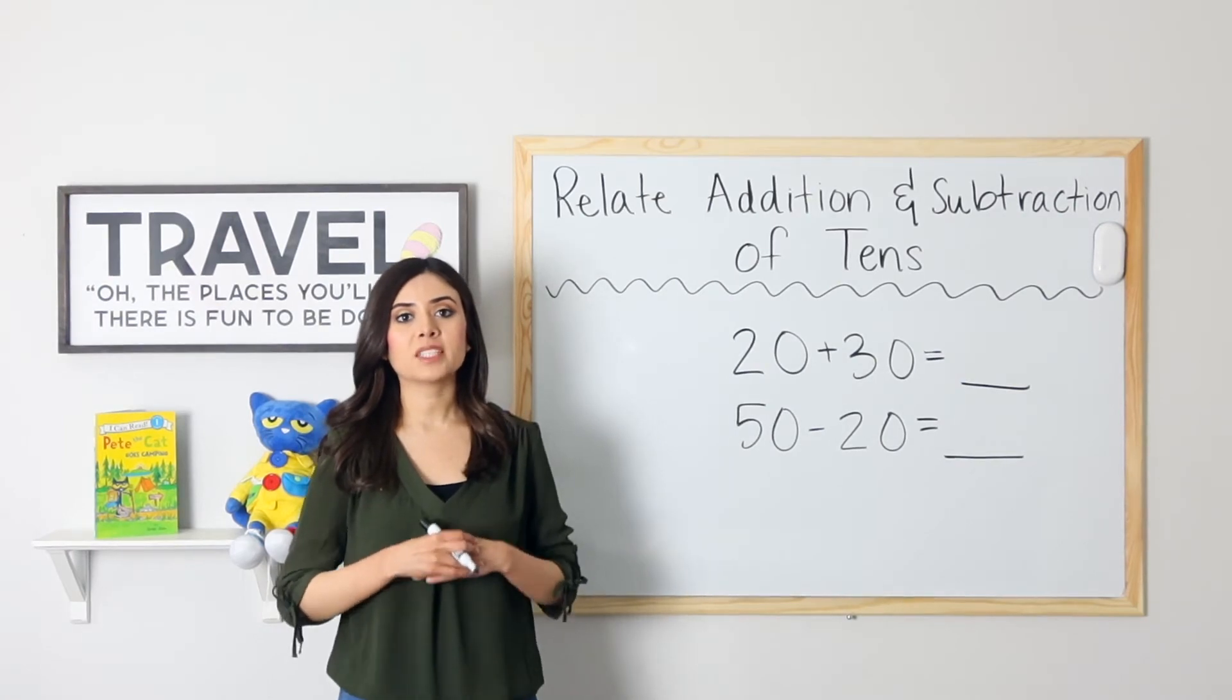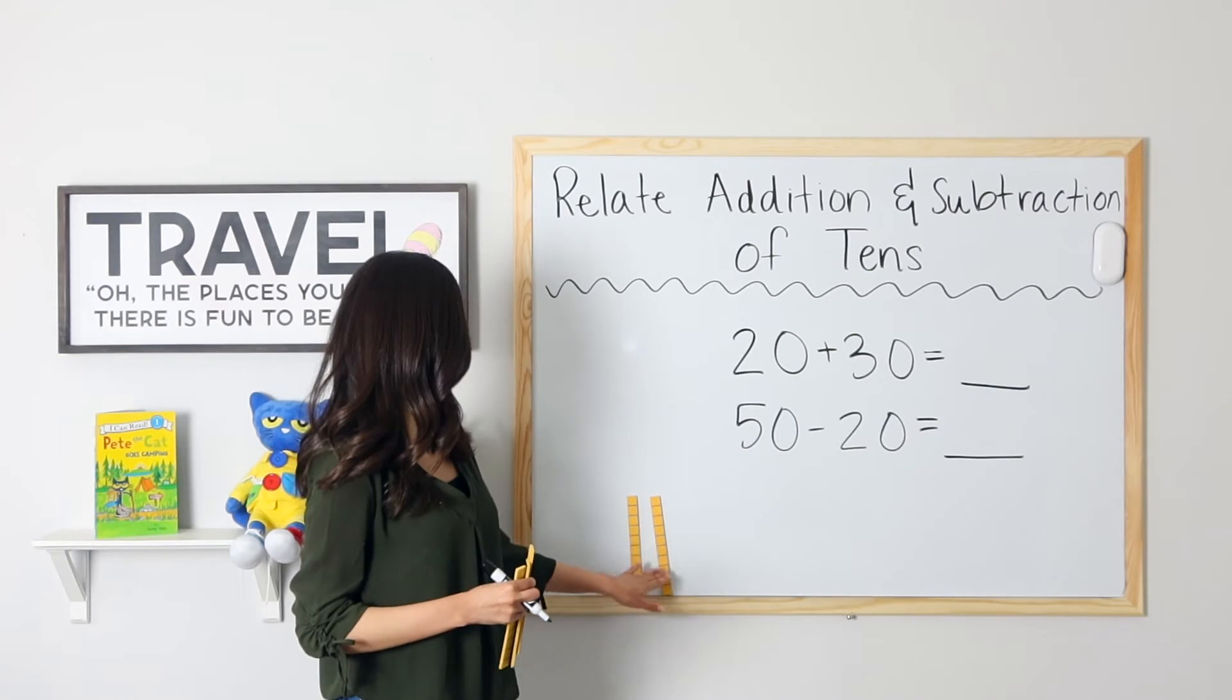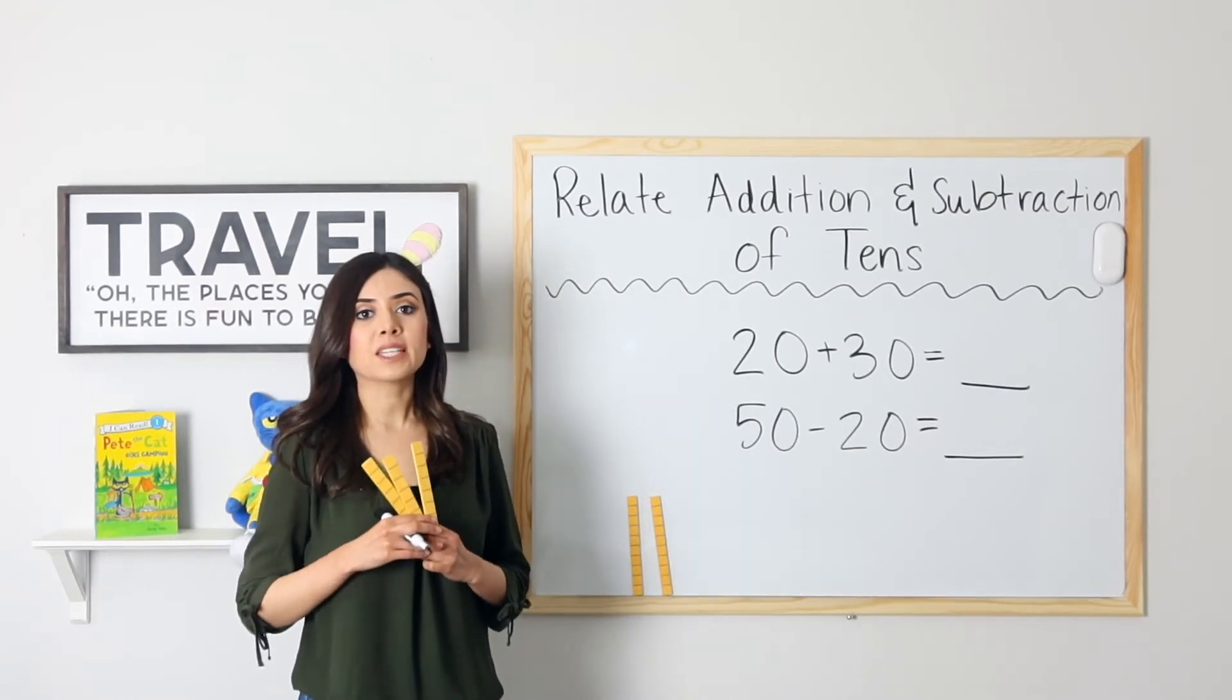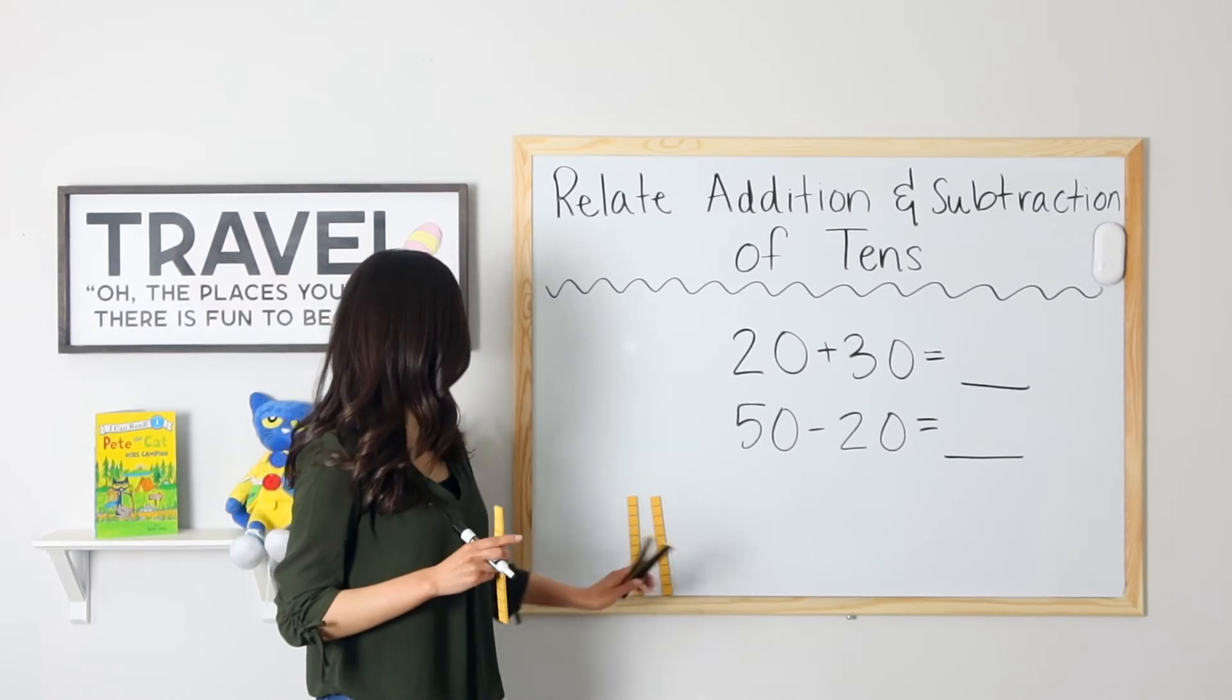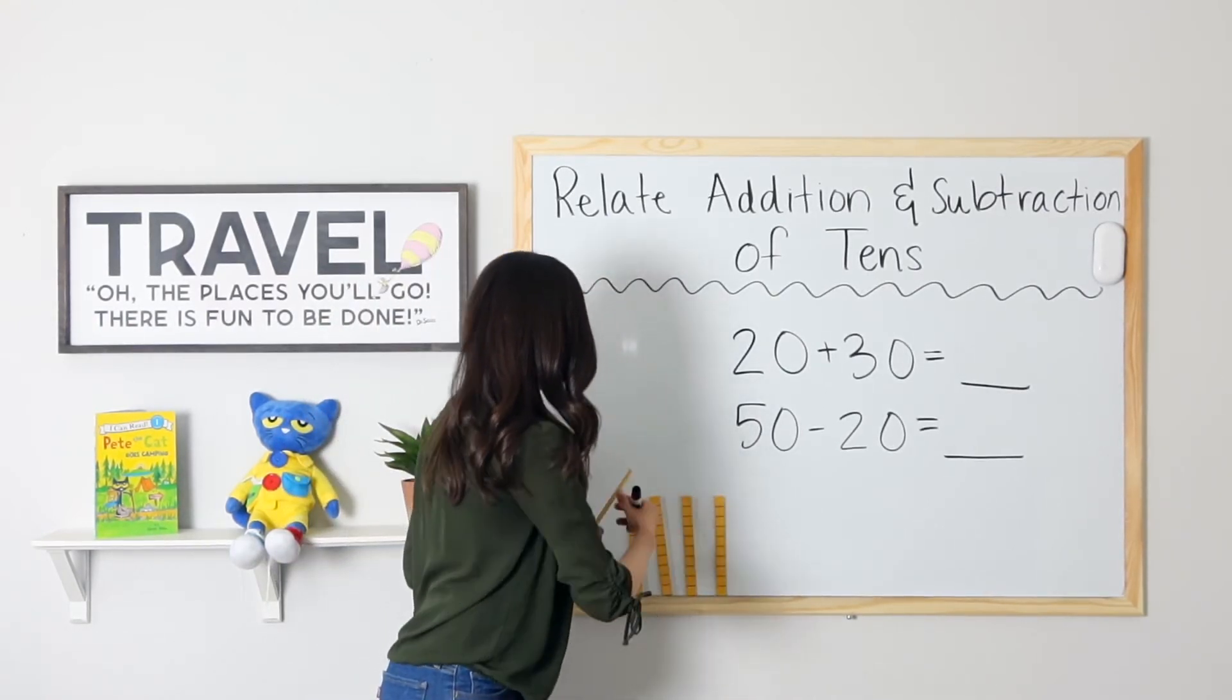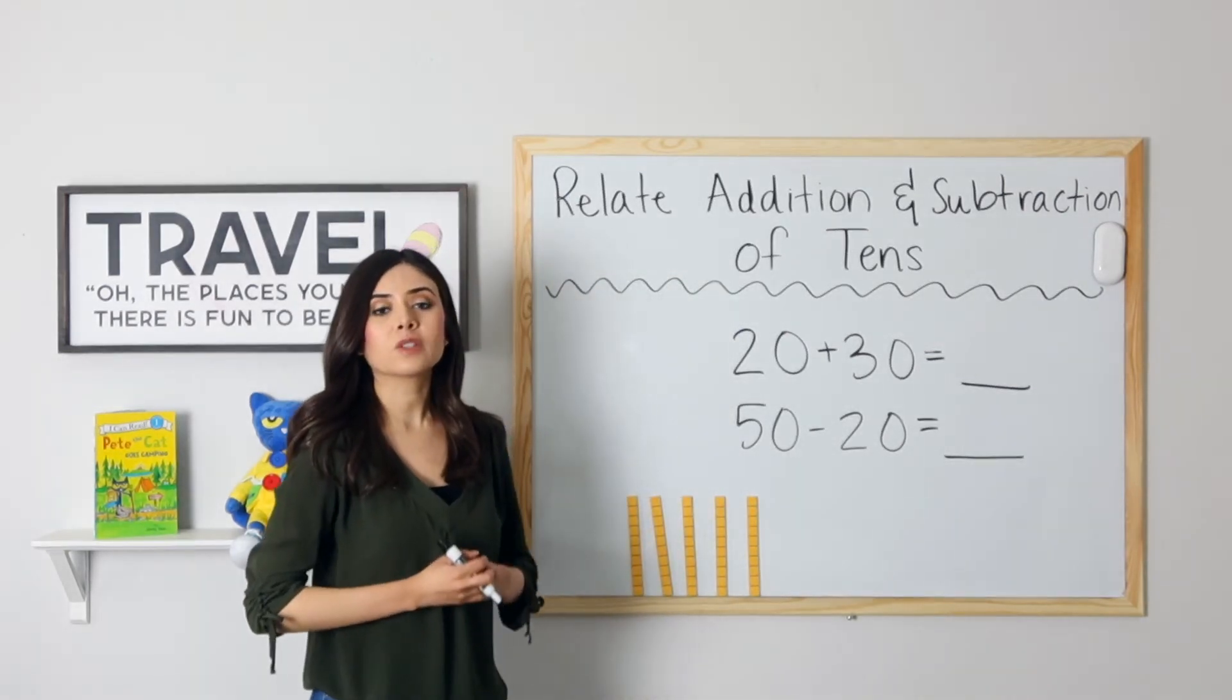Next example. I have 20 plus 30. I have 20 units up. 10, 20. I will go ahead and add 30 more to see what I end up with. So 20, 30, 40, 50. 20 plus 30 equals 50.